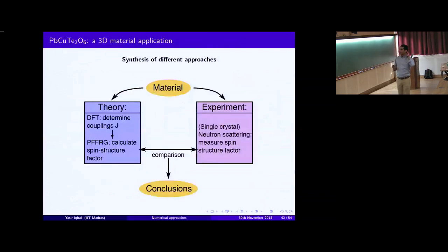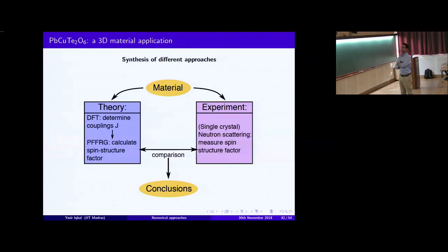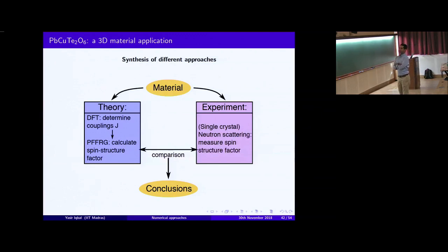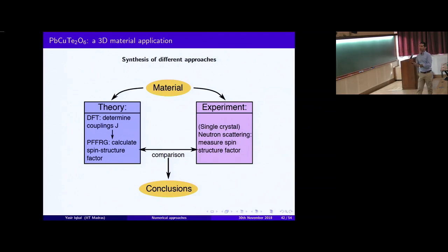Now I come to the last part of my talk, which is showing the power of the FRG in synthesizing theory and experiment. The way we work recently is that for interesting 3D candidate spin liquid materials, ab initio density functional theory determines the couplings J, which act as input to the FRG, which calculates the spin structure factor. This is then compared with neutron scattering on single crystals when available. You can also compute powder averages by simply integrating.